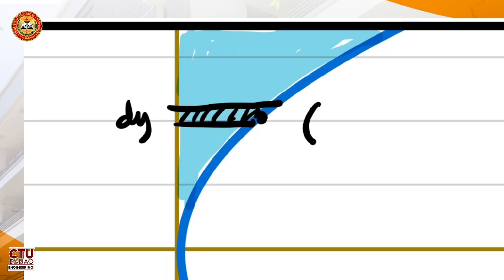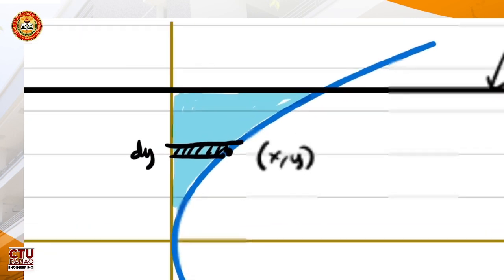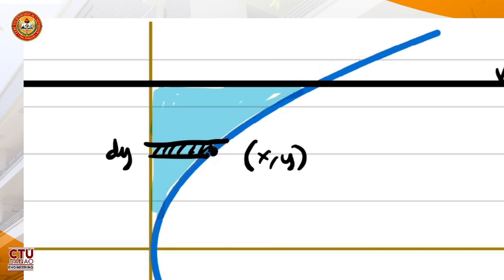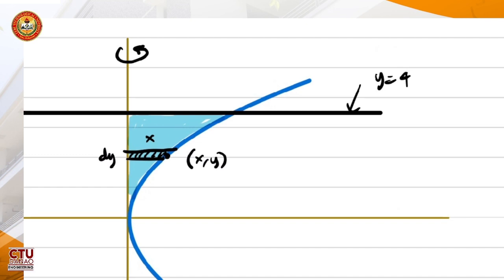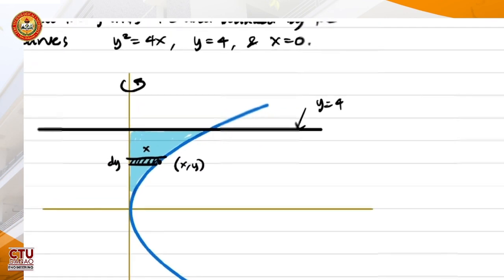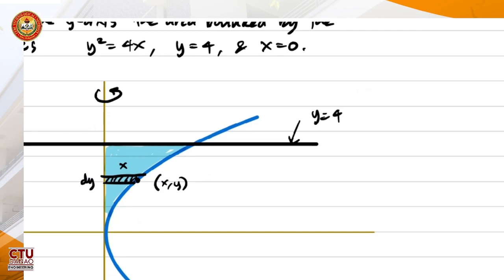This point is xy that belongs to this curve. Then, this length is simply x. So for the boundary, since we will be integrating the volume generated from this point to this point, we need to get the intersection. So to get the intersection, we just equate these two equations because that is the intersection of the line y equals 4 and the parabola y squared equals 4x.